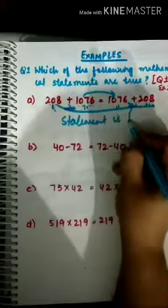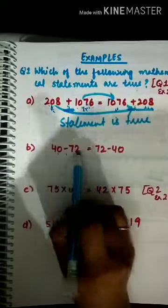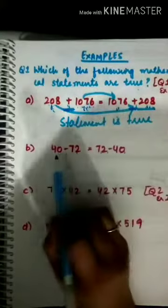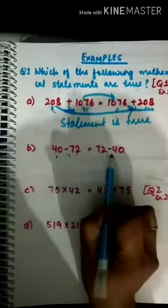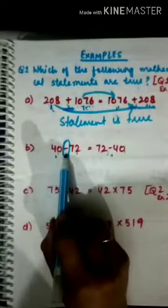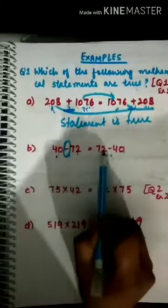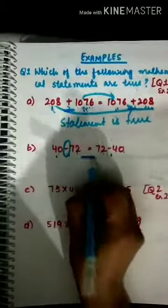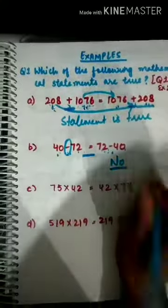The next example is 40 minus 72 compared with 72 minus 40. Here they have simply changed the order of the numbers, but the operation is subtraction. We have studied that subtraction is not commutative — changing the order changes the answer. So the answers will not be the same, and the statement is not true.